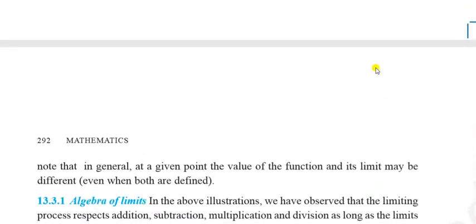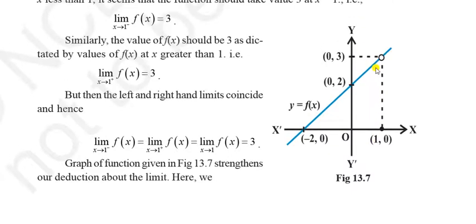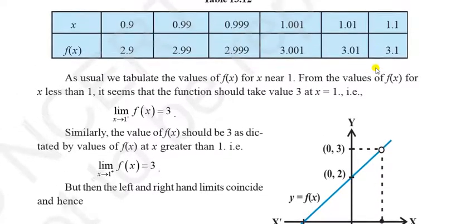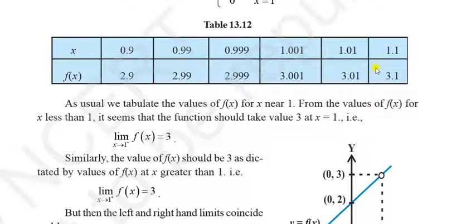To summarize: the limit exists when both left-hand limit and right-hand limit exist, are equal, and approach one particular function value. We reviewed ten examples illustrating limit concepts. For any doubts, comment or email at pradip.130582@gmail.com. Thank you so much.